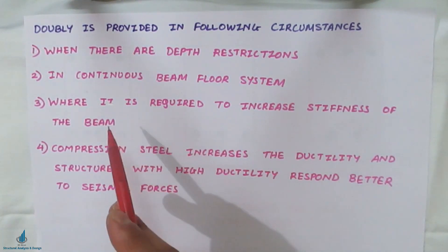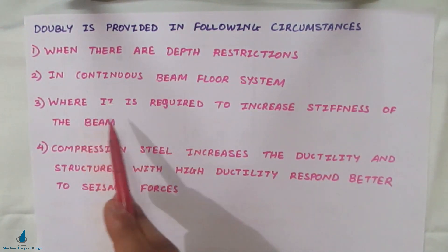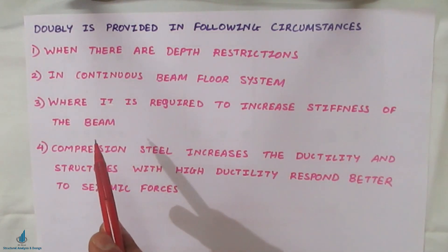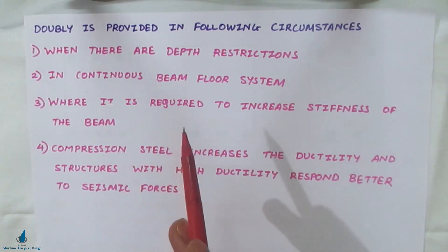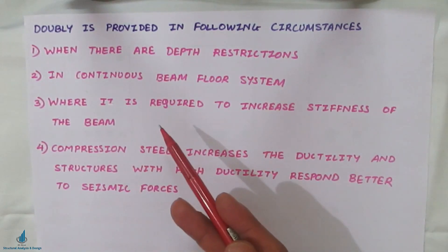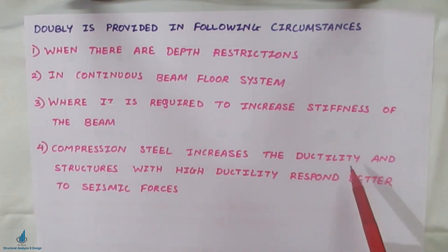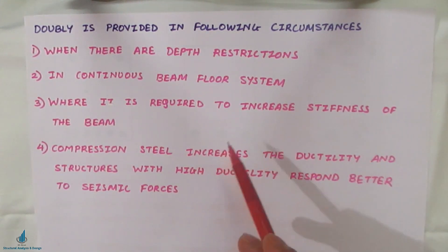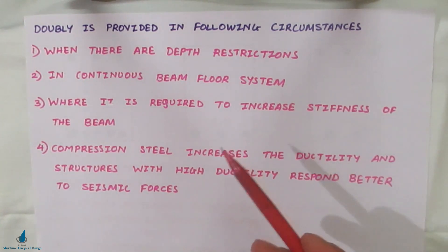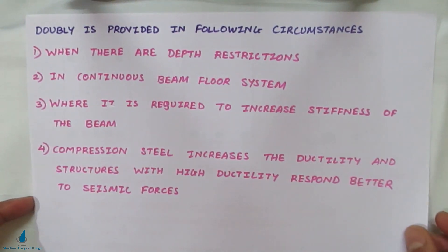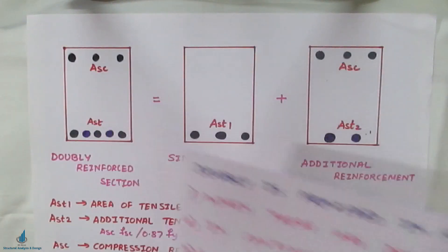A third reason to use a doubly reinforced beam is to increase the stiffness of the beam — stiffness being the resistance to deformation under applied load. Additionally, compression steel increases the ductility of the structure, and structures with high ductility respond better to seismic forces. So these are the four criteria when we go for a doubly reinforced beam: large moment, depth restrictions, stiffness requirements, and seismic ductility.